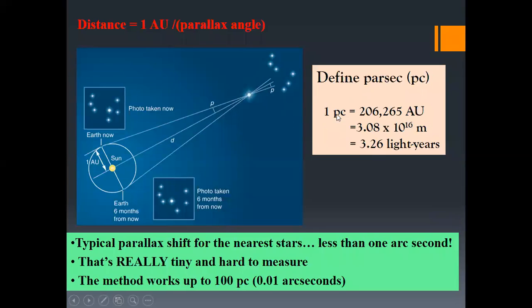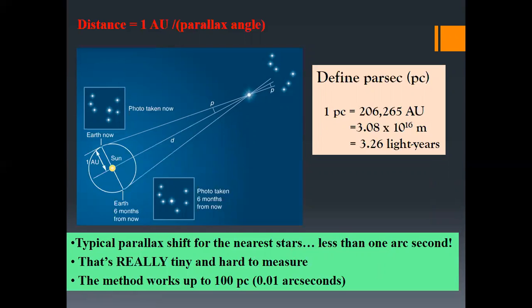For a star located one parsec away, the distance in astronomical units is 206,265, and in light years it is 3.26 light years — one parsec equals 3.26 light years. Typically, the parallax shift for nearby stars is less than one arc second, which is really tiny and hard to measure. This method works up to about 100 parsecs, corresponding to a parallax shift of 0.01 arc seconds.